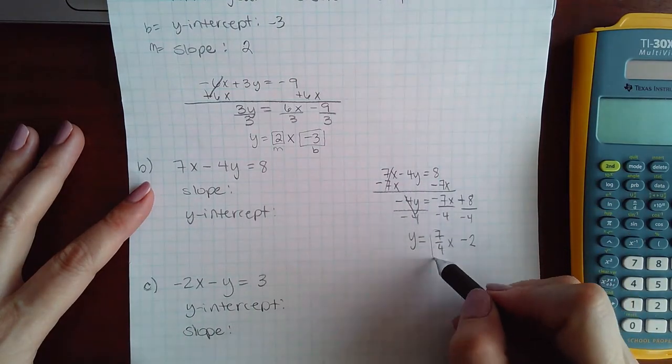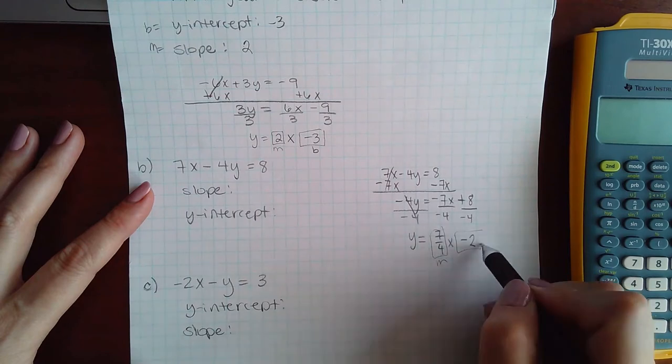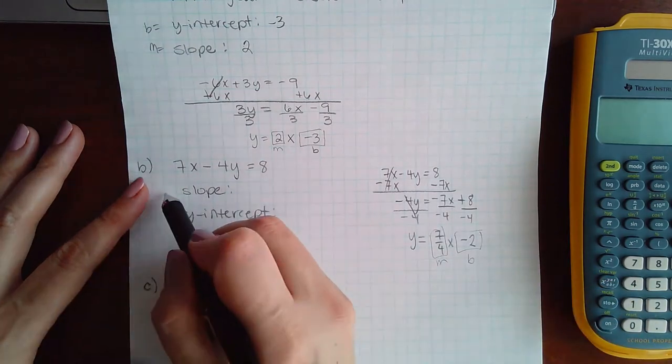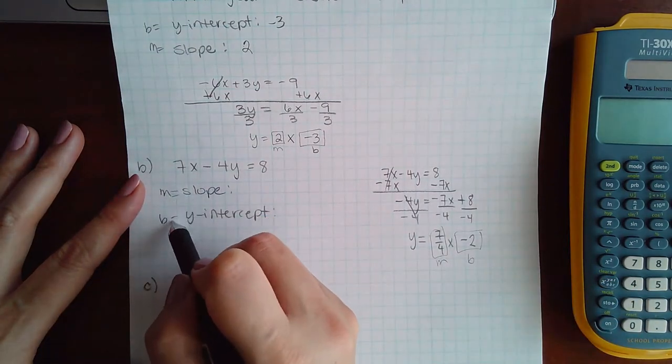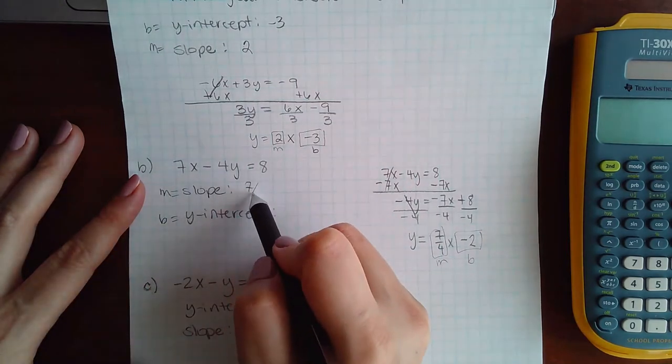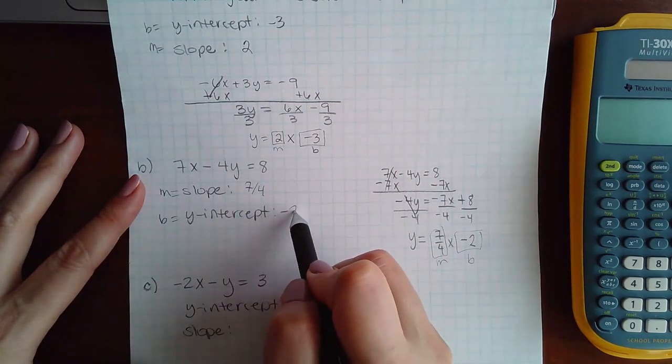So this is my M and this is my B. So my M is slope, my B is my y-intercept. So this is 7 fourths and this is negative 2.